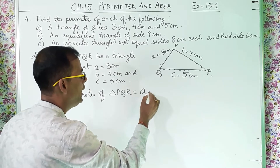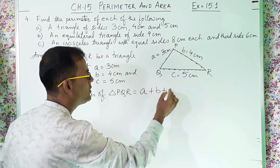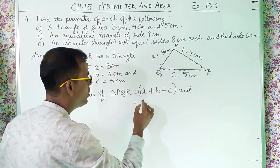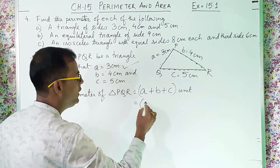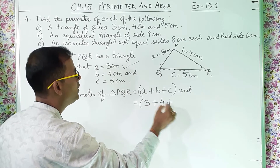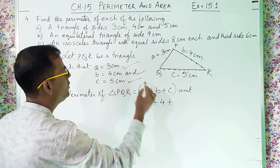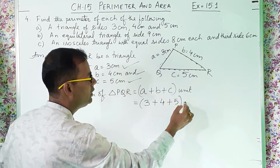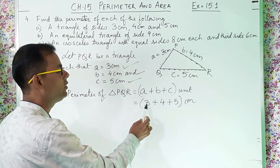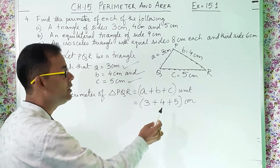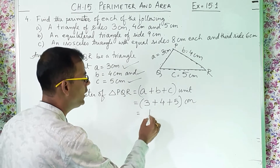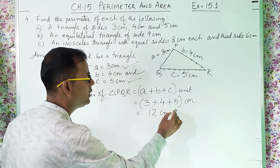So a = 3 cm, b = 4 cm, c = 5 cm. We add: 3 + 4 = 7, and 7 + 5 = 12. Therefore, the perimeter of triangle PQR is 12 centimeters.